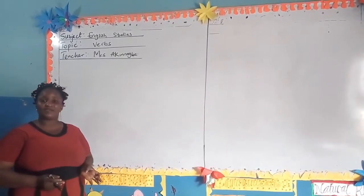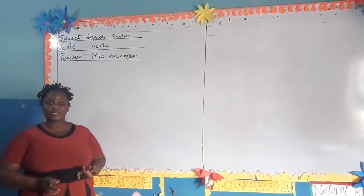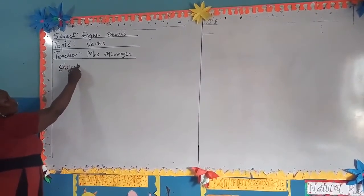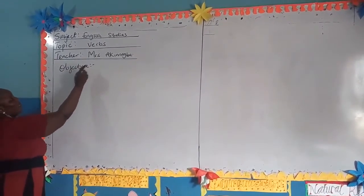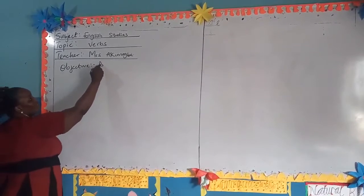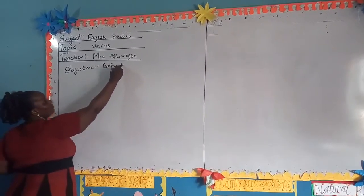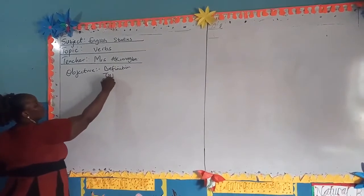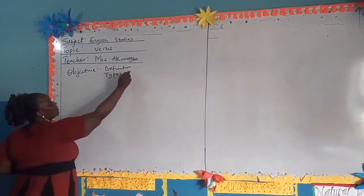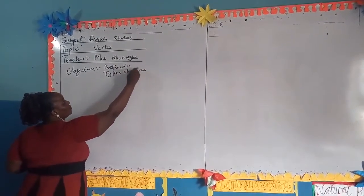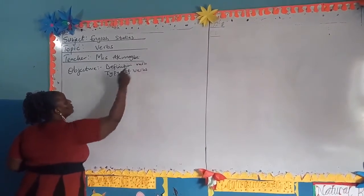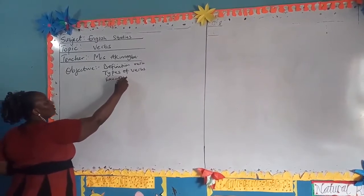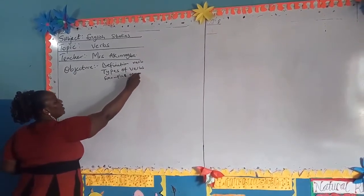Our lesson objectives is what we are going to be looking at first. The objectives are the definition of verbs, types of verbs, and we have examples, examples of verbs.